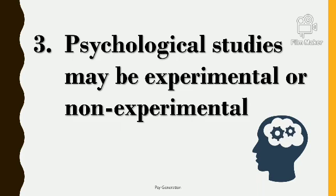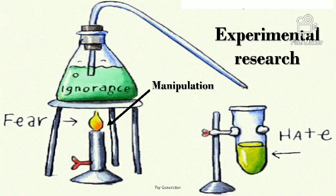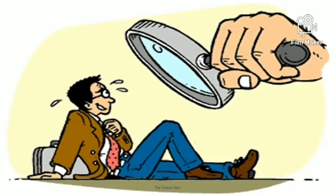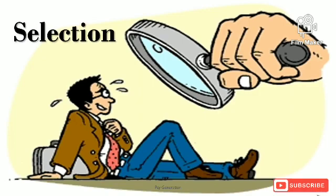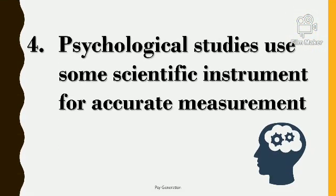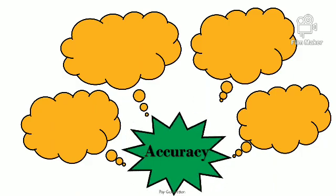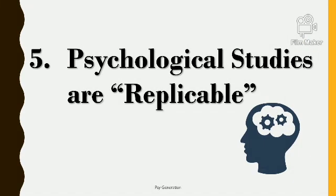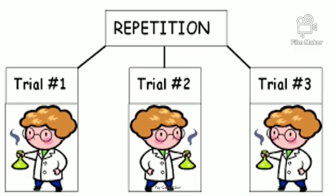Third, psychological studies may be experimental or non-experimental — manovijyanaik shodh experimental ho bhi sakti hai aur nahi bhi. For example, in experimental research, the researcher manipulates one variable and observes its effect on another variable, jabki non-experimental research mein yeh jo manipulation hota hai woh direct nahi hota, balki yeh selection ke aadhar pe hota hai. Fourth, psychological studies use scientific instruments for accurate measurement.